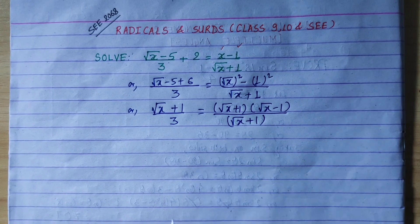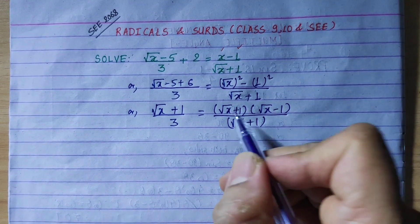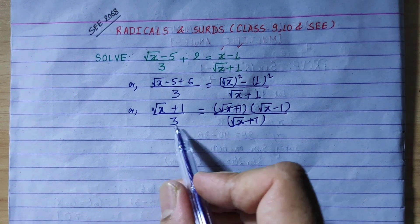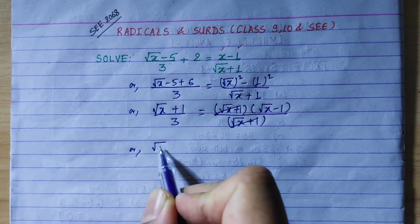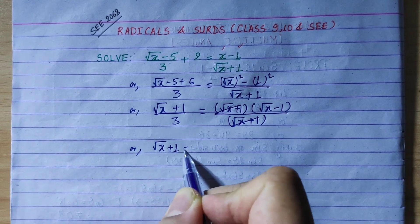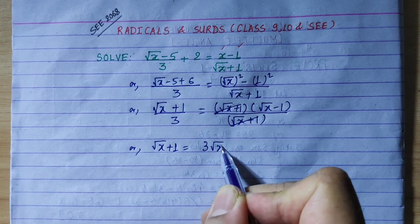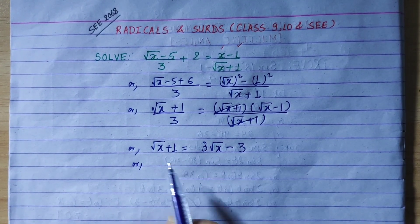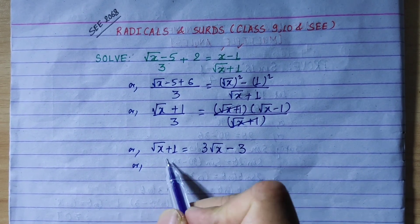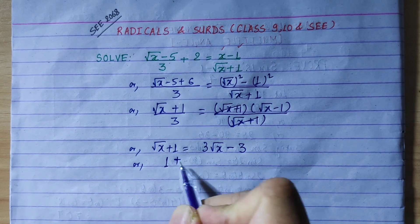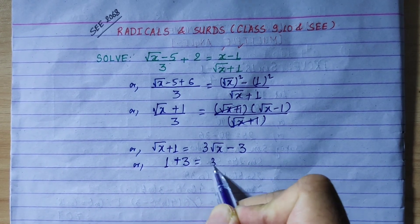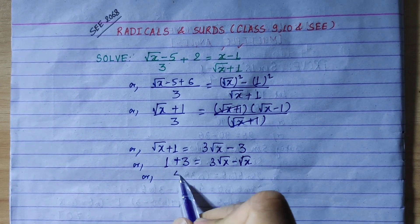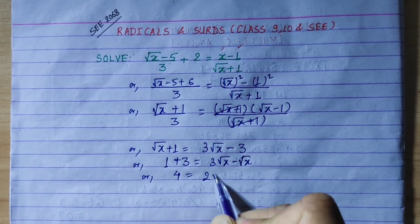Now we can cancel terms. We cancel and cross multiply: root x plus 1 goes to 3, giving root x minus 3, times 1 equals 3. Collecting root x terms and numbers: 1 plus 3 equals 3 root x minus root x. Simplifying: 4 equals 2 root x.